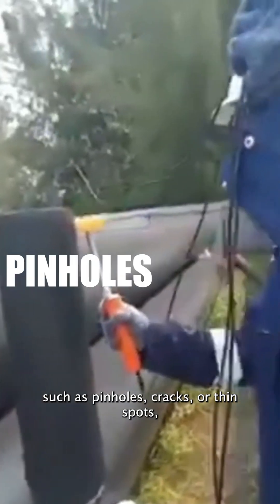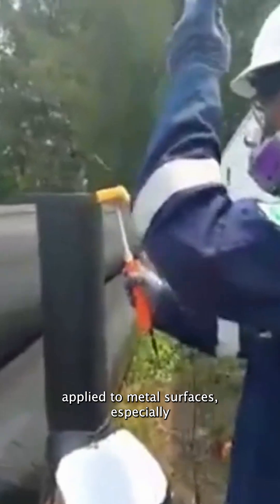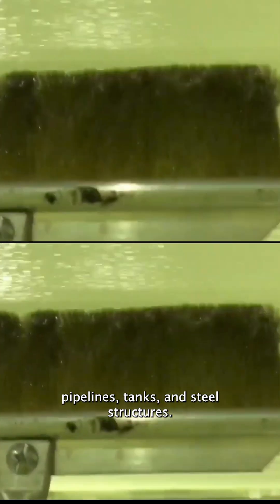These include pinholes, cracks, or thin spots in protective coatings applied to metal surfaces, especially pipelines, tanks, and steel structures.